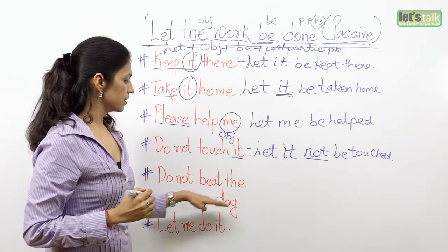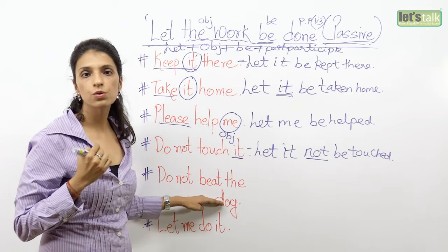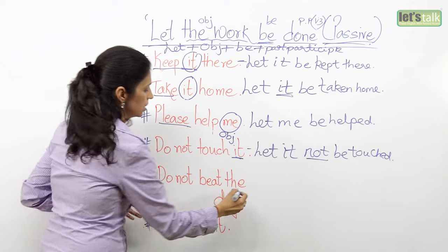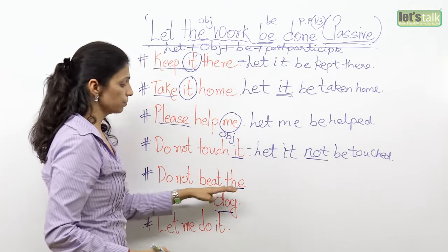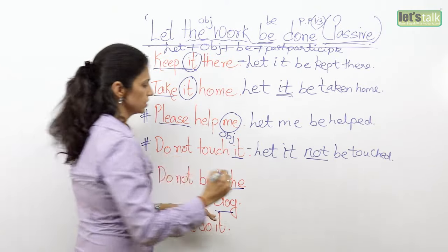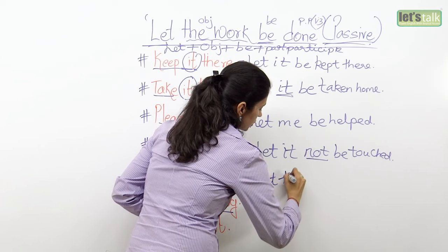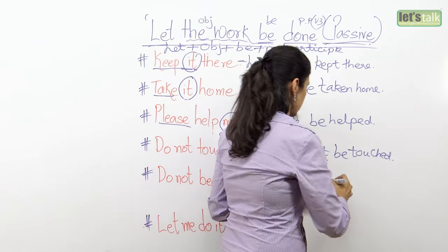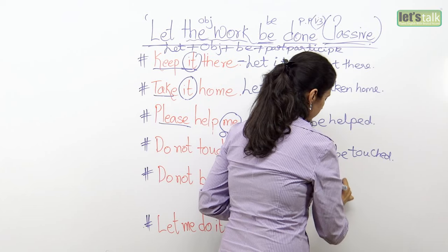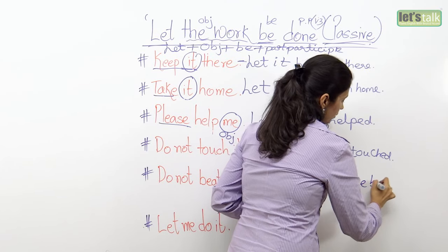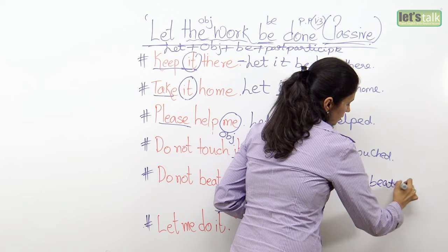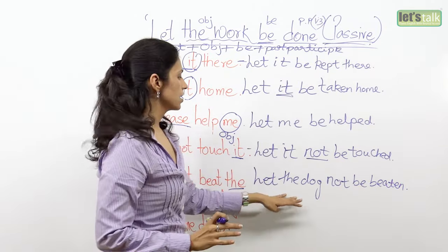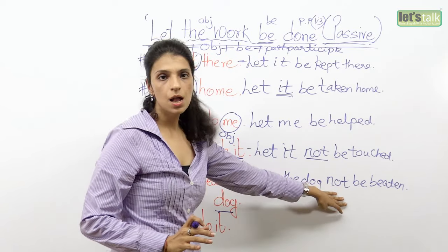Another negative: 'Do not beat the dog.' Ask 'do not beat what? who?' — the person or thing on which the action is done becomes the object. The answer is 'the dog.' So follow the same sequence: 'let,' the object 'the dog,' then 'not,' then 'be,' and the past participle of 'beat' is 'beaten.' The passive is: 'Let the dog not be beaten' — leave him alone. Or: 'Let him not be beaten.'